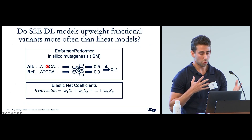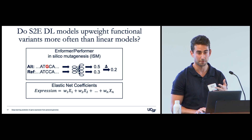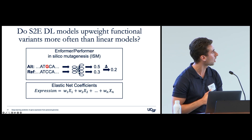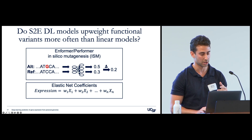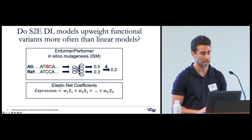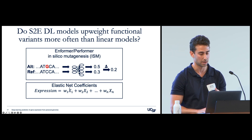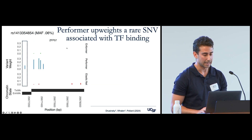Although Performer gets similar accuracy to elastic net models, one reason we might still want to use a sequence-to-expression model is if it does a better job at finding functional variants. To look into that, we took variants predicted by each model to cause large changes to gene expression. For Informer and Performer, that meant simple in silico mutagenesis experiments: take two sequences otherwise identical but differing by the variant, form a prediction with each, and take the difference - representing the predicted change due to the variant. For elastic net models, we used the learned coefficients for each SNP. We'll call these variant weights for simplicity.